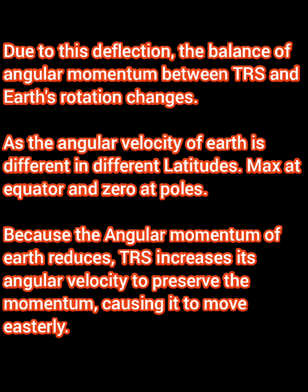With this poleward movement, several other changes happen. There was a balance between the rotation of the earth and the movement of the hurricane before. As you know, the earth's angular momentum at the equator is higher and is almost zero at the pole, with intermediate values in between. By Newton's second law, the rate of change of momentum must stay constant. Because the TRS has moved closer to the pole, the earth's angular momentum has reduced there, and to compensate, the TRS starts to rotate faster and increases its own angular momentum, thus preserving the mutual balance.